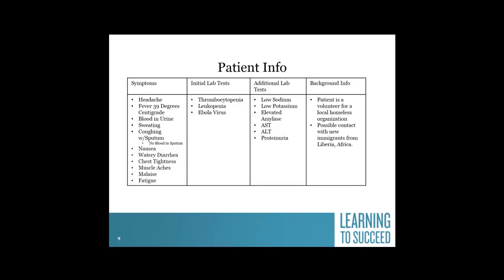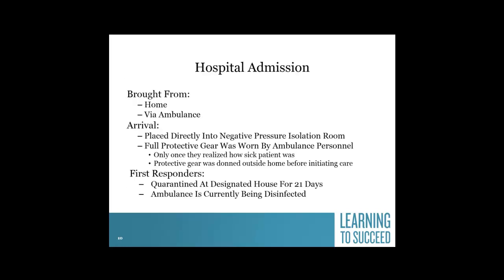You probably also noticed that the patient volunteers at a local homeless shelter and may have had contact with immigrants from Liberia, Africa. The patient was brought from home in the ambulance and placed directly into the negative pressure isolation room. Full protective gear was worn by the ambulance personnel once they realized how sick the patient was. Protective gear was donned outside the home before they cared for the patient. The first responders and ambulance personnel are being quarantined at a designated house for 21 days. The ambulance is currently being disinfected.